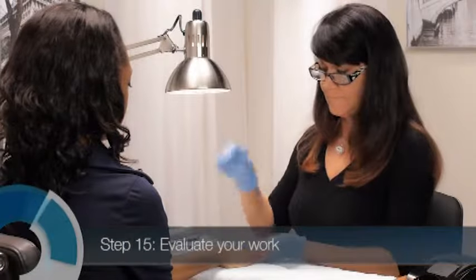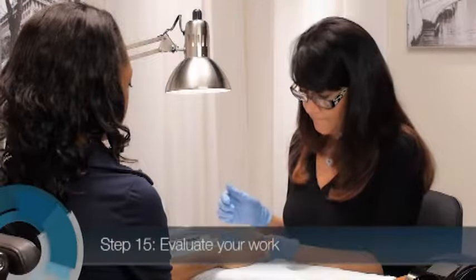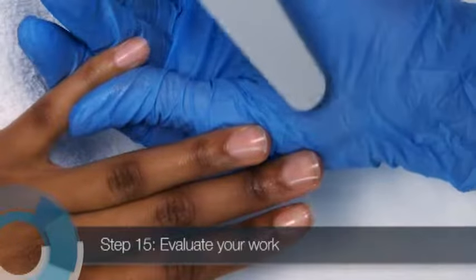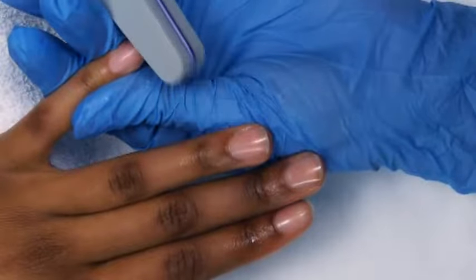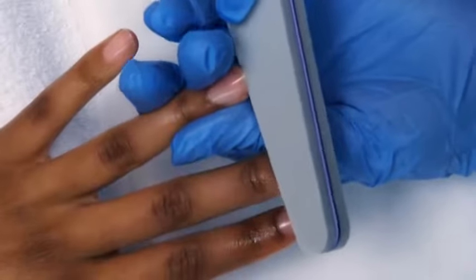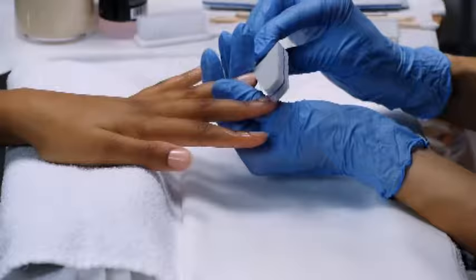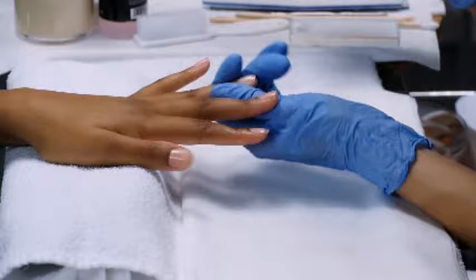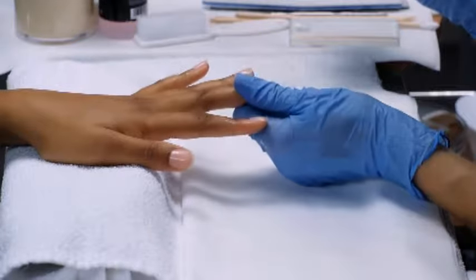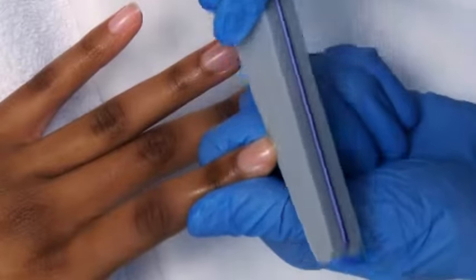Next, evaluate your work and make any necessary adjustments. If needed, bevel the underside of the nail to remove any rough spots or cuticle particles from the free edge. Hold a medium grit abrasive or buffer at a 45-degree angle to the underside of the nail and file with a gentle side-to-side stroke.